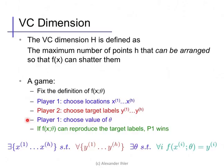Mathematically, we have the definition that there exists a collection of h points x1 to xh such that for all possible labelings y1 to yh, there exists a setting of the parameters so that all the training labels can be produced by the classifier. Okay, so with that definition in hand, another example.